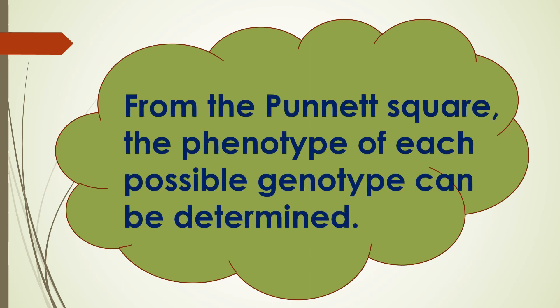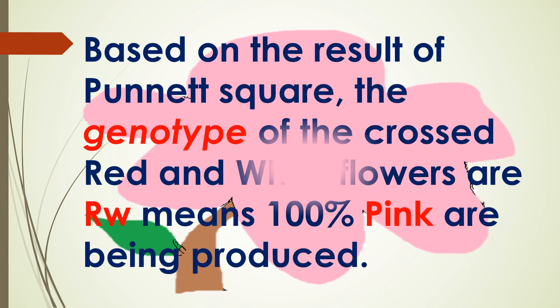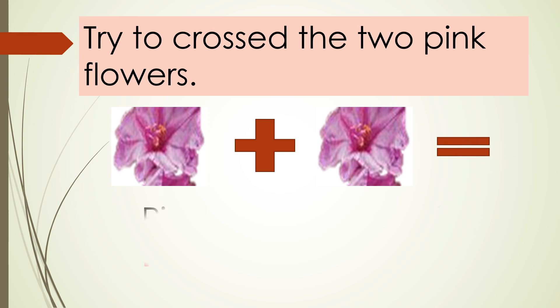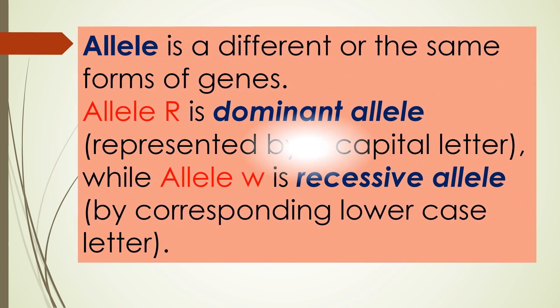From the Punnett square, the phenotype of each possible genotype can be determined. Based on the result of the Punnett square, the genotype of crossed red and white flowers — or RW — means 100% pink flowers are being produced. Try to cross two pink flowers. Alleles are different forms of genes. Allele R is the dominant allele, represented by a capital letter, while allele W is the recessive allele, represented by the corresponding lowercase letter.